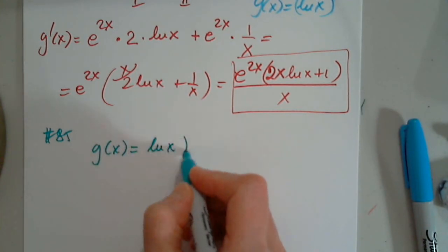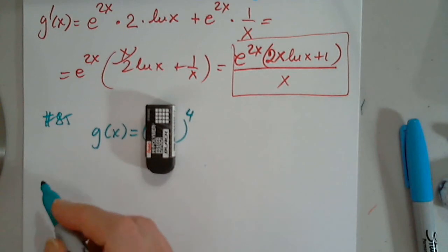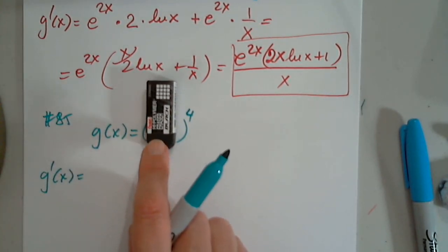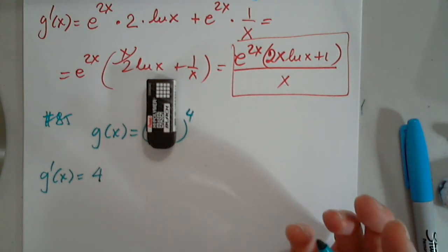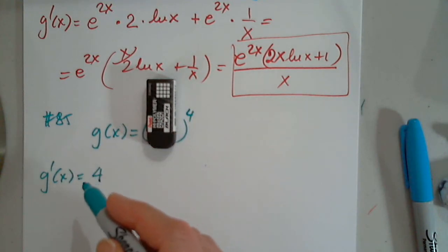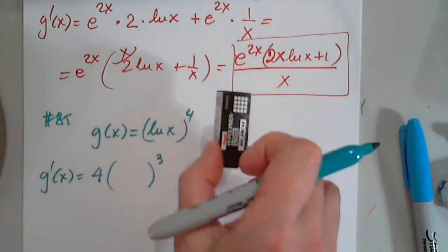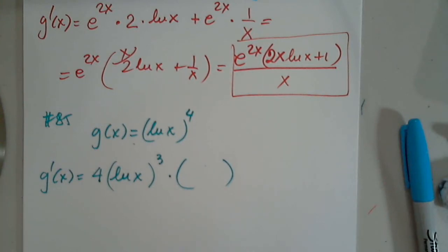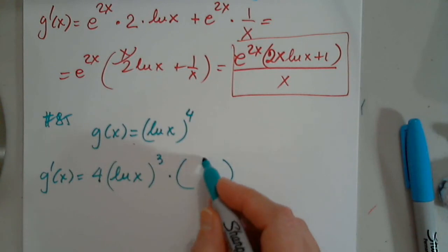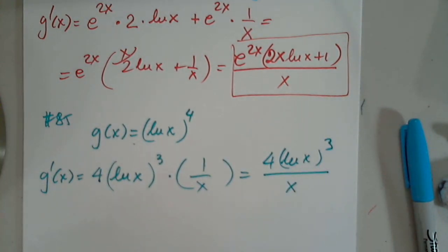And we have g of x equals natural log x to the fourth power. So I have a function to the fourth power. How do I differentiate this? I don't know what's in there yet. Do you multiply the function by the power? We never multiply the function by the power, right? You mean put it down in front? Yeah. Okay. Yes. I agree. So this now to which power? 3. Very good. So I know it's natural log. Now, times natural log prime. 1 over x. That's it. So this is 4, natural log x to the third, everything over x.